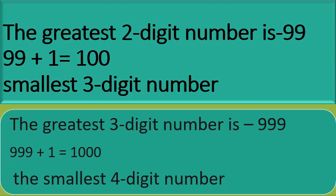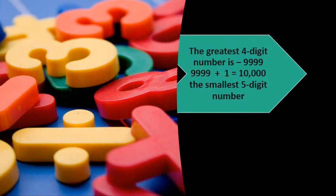The greatest 3-digit number is 999. 999 plus 1 is equal to 1000, so the smallest 4-digit number is 1000. The greatest 4-digit number is 9999. 9999 plus 1 is equal to 10,000, so the smallest 5-digit number is 10,000.